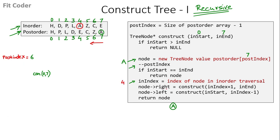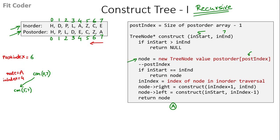Then we call construct for the right of node A with parameters (5, 7). For this call, inStart is 5 and inEnd is 7. We check if start is greater than end — false. We create a new tree node with the 6th index of the postorder array, which is Z. We decrement postIndex so it becomes 5. We check if start equals end, then search Z in the inorder traversal. The index of Z is 5, so inIndex becomes 5. Then we call construct(6, 7) for the right of Z.